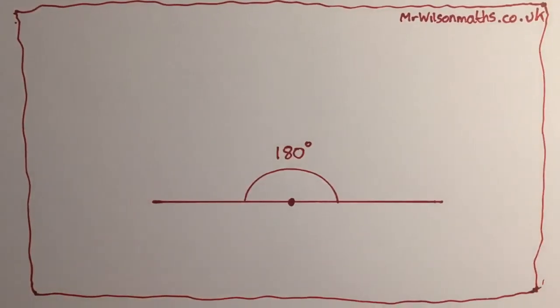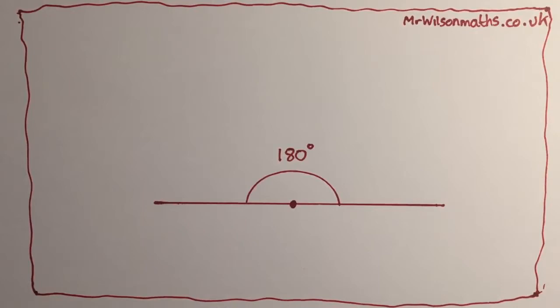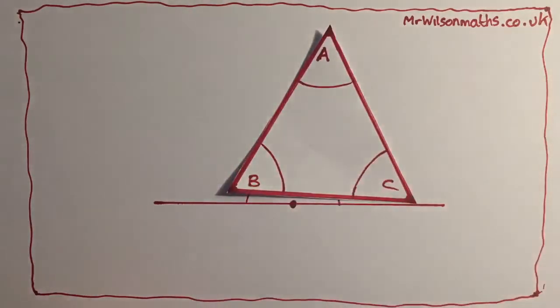Because angles on a straight line add up to 180 degrees. Now I want you to imagine that you have a triangle and the angles inside it are A, B and C.